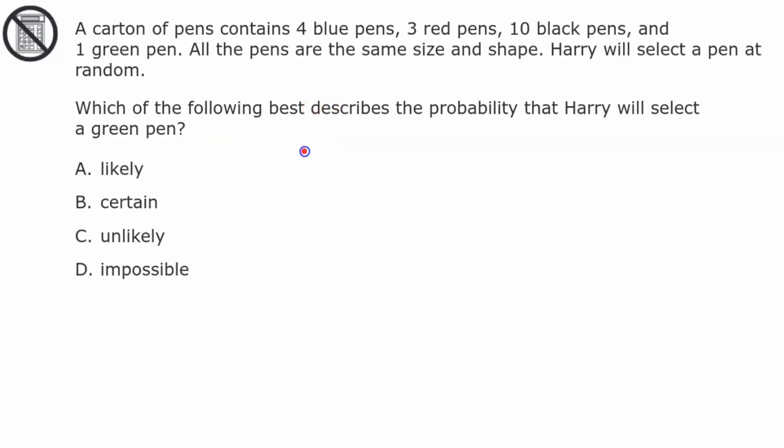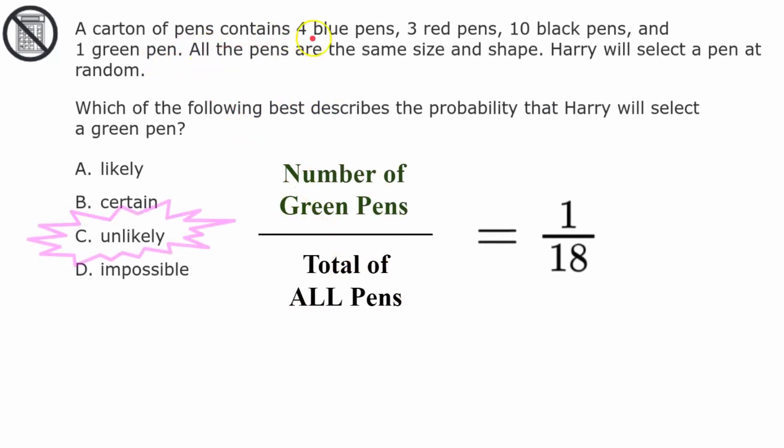Welcome back. The first thing I want to do is identify the number of green pens all over the total of all the pens that I have. So I have one green pen out of 18. Four plus three is seven, plus ten is 17, plus one more is 18. So there are 18 pens in all and one of those 18 pens is green. So I have a one in 18 chance of drawing a green pen. And this is not impossible, it's unlikely. So our answer is C.